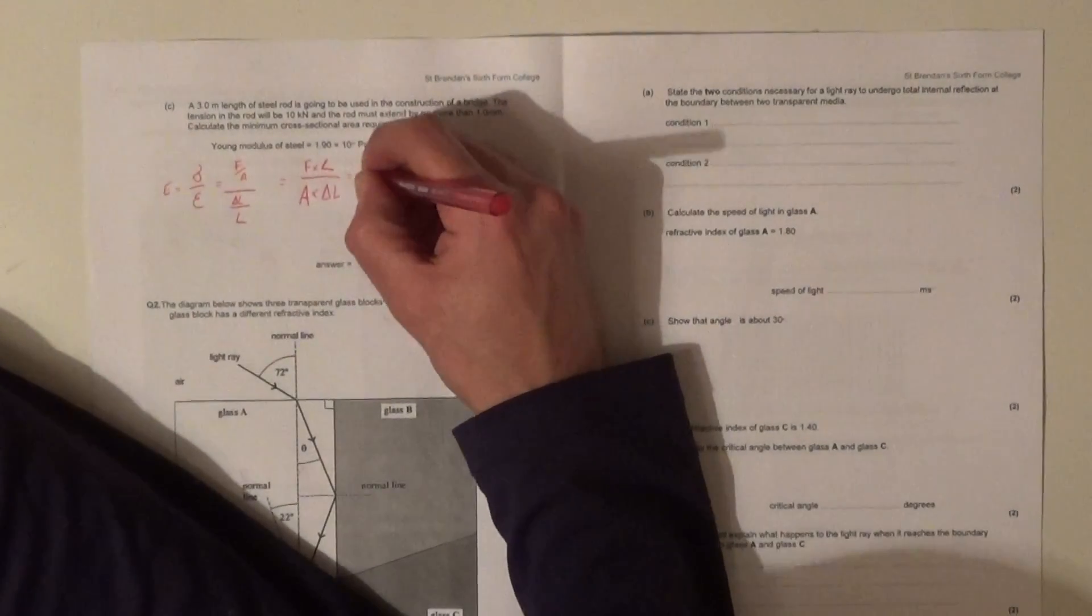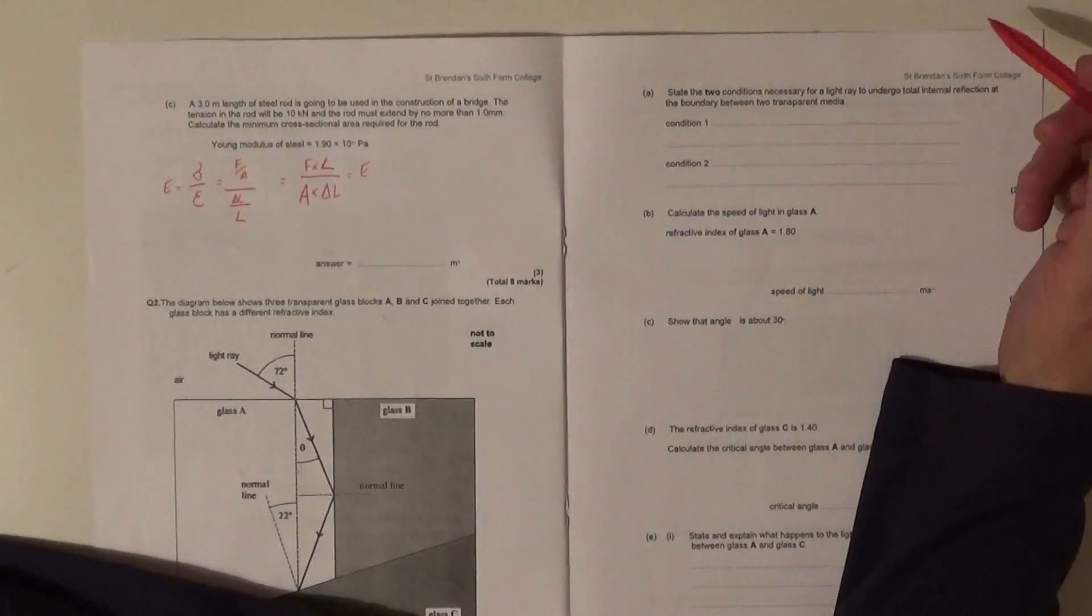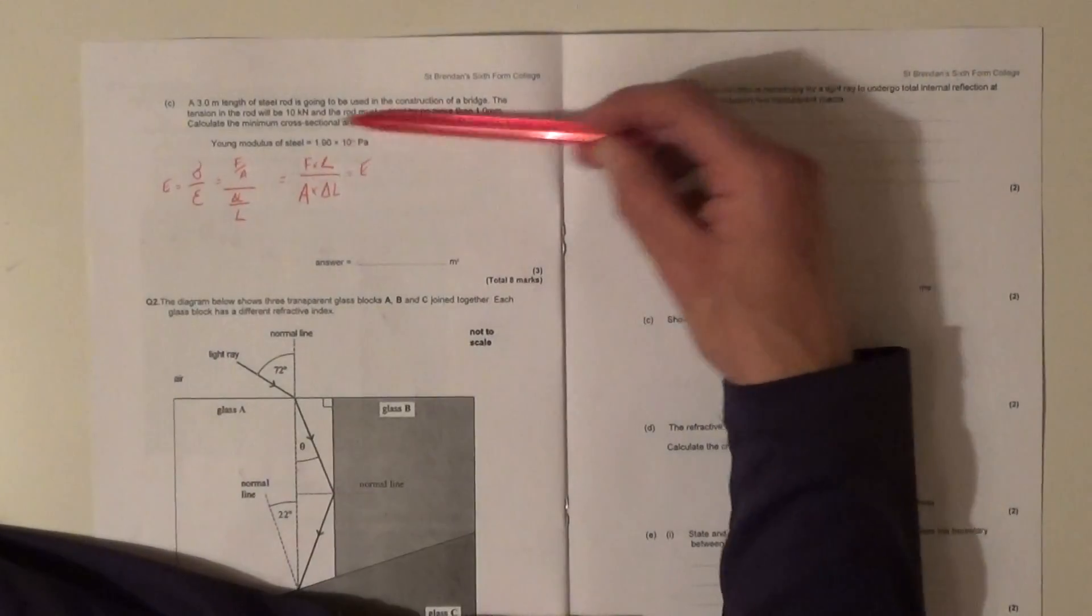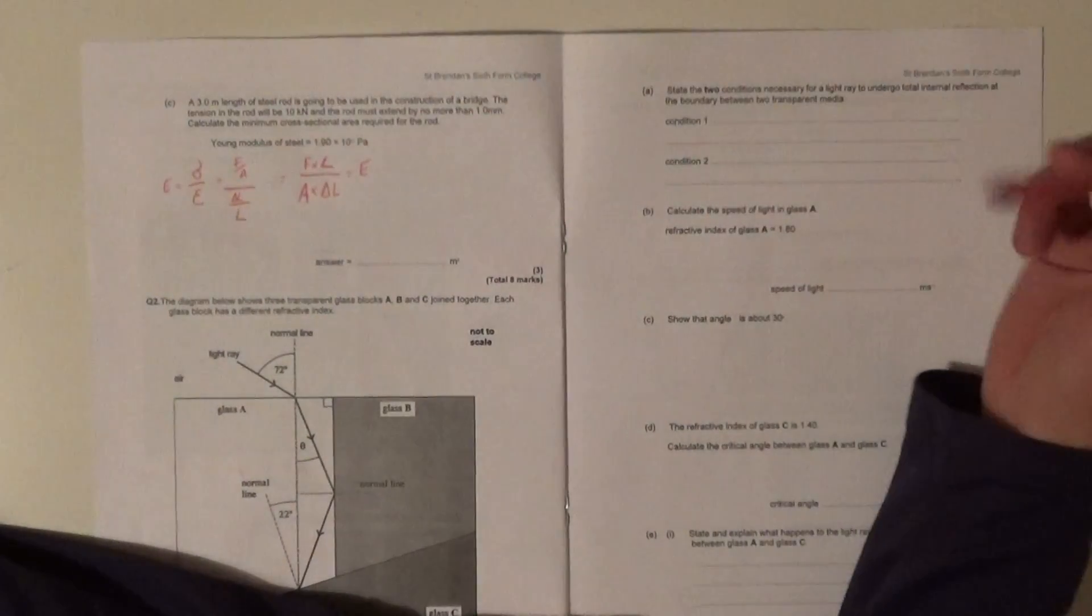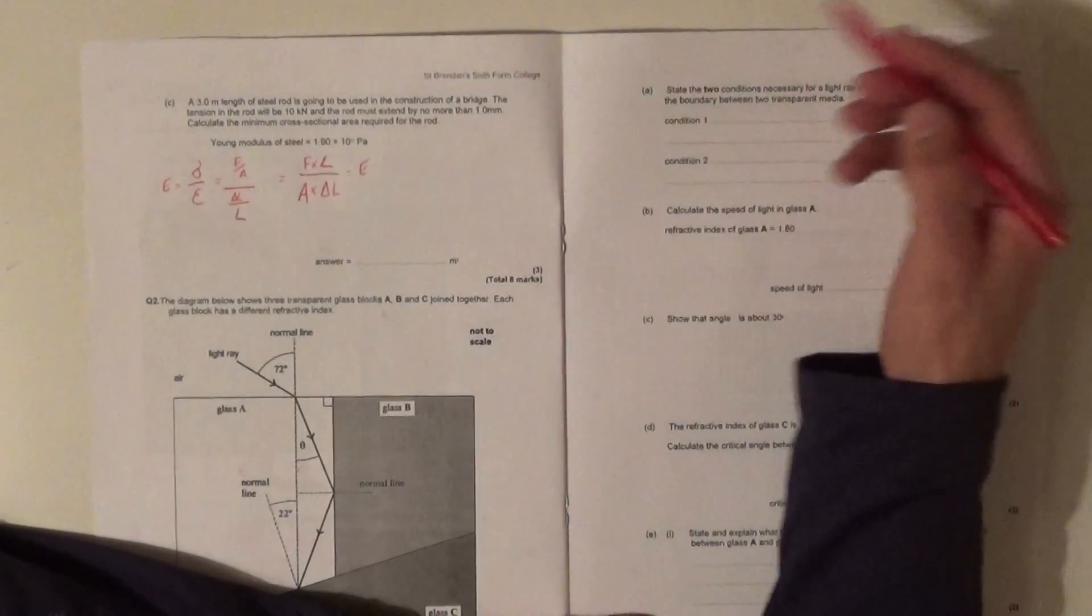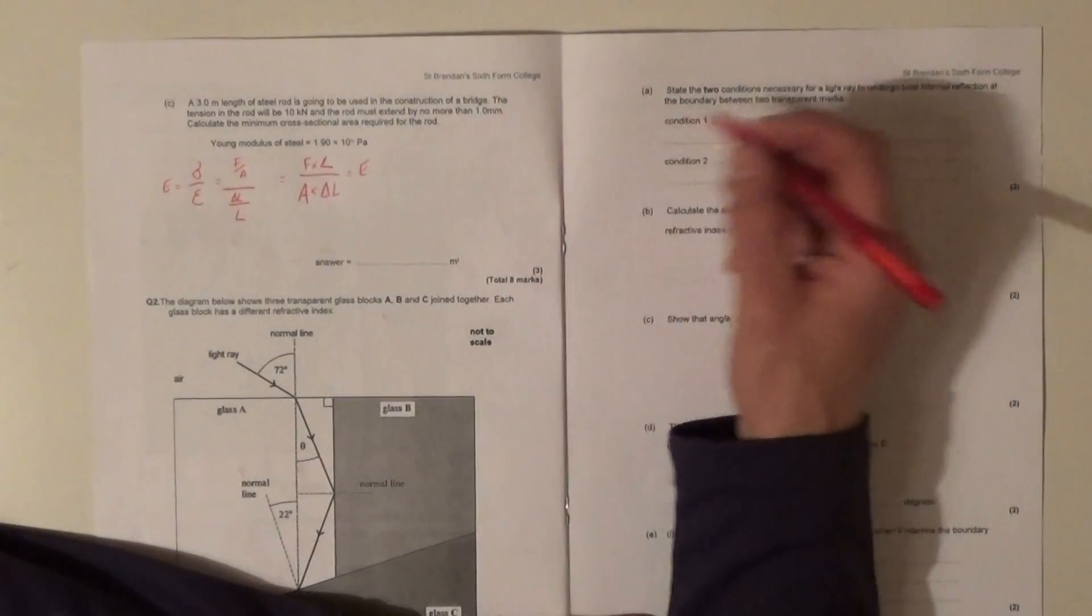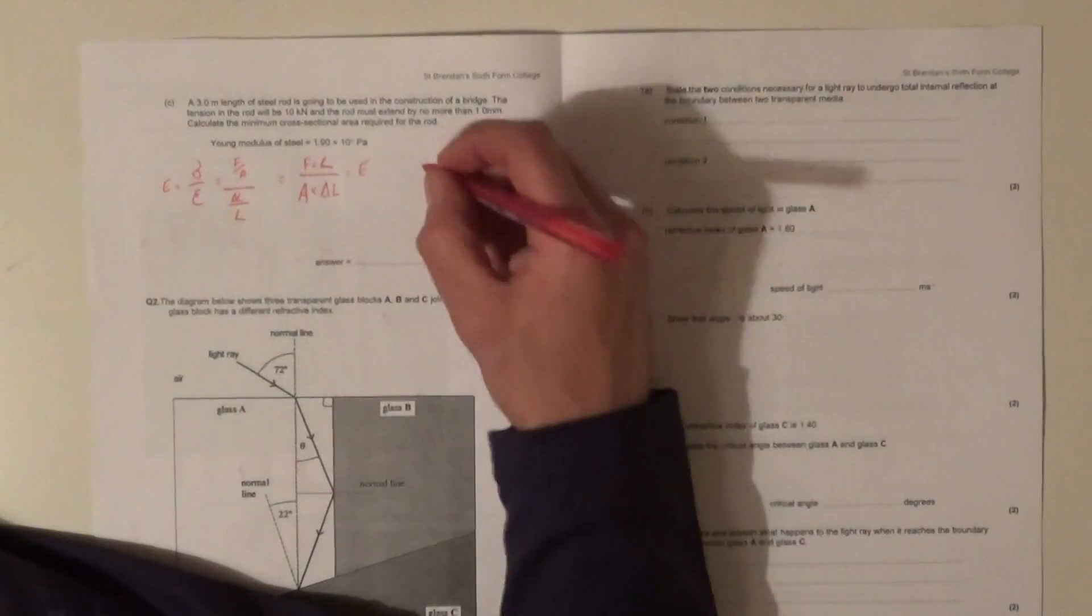Once you got it to this stage, then what you really want to do is we're trying to find the minimum cross-sectional area. So you want to rearrange this equation to make A the subject. If we do this we can say, well, multiply by A and divide by E and that'll give us what we want.